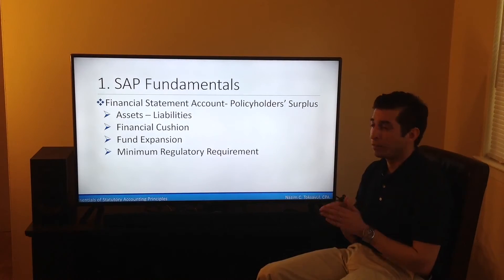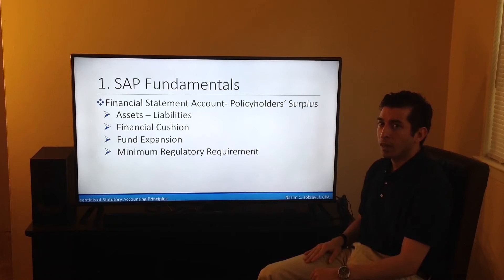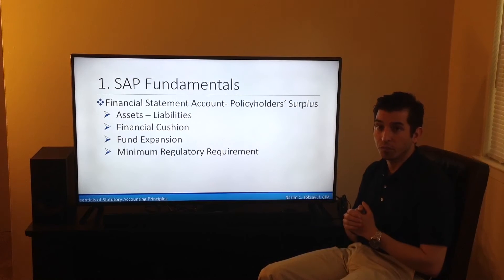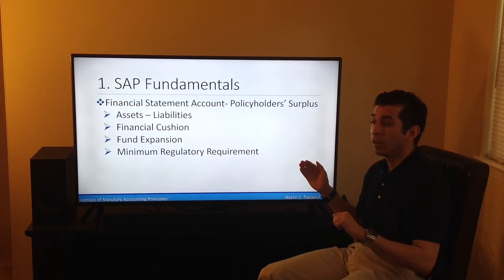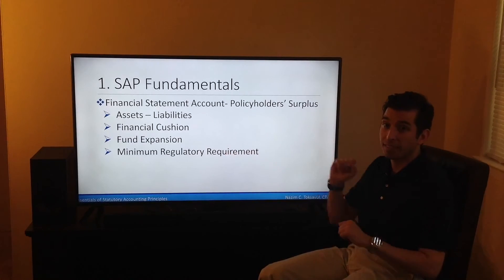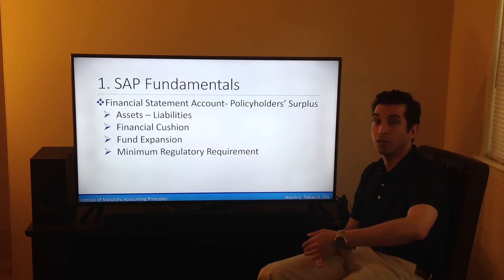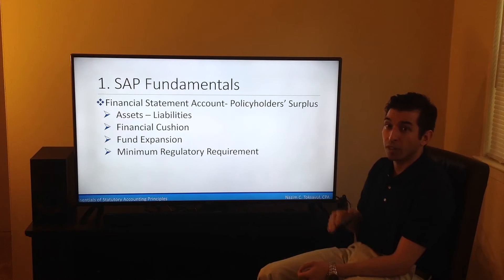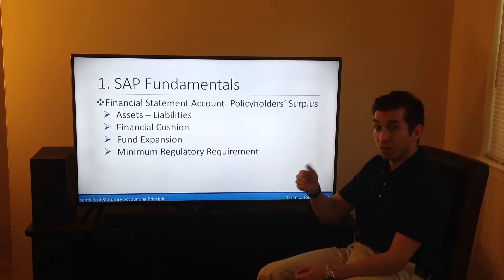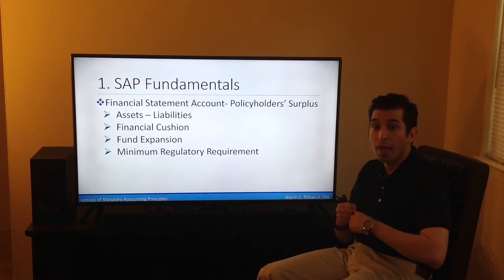The final item to cover as a fundamental part of SAP is the policyholder surplus. Under SAP, instead of equity, you have policyholder surplus — this is SAP's equivalent to equity. Like equity, policyholder surplus is calculated by taking the difference between assets and liabilities. The policyholder surplus acts as the financial cushion of the insurance company and is also used to fund expansion. It must meet certain minimum regulatory requirements based on the risk taken on by the insurance company.